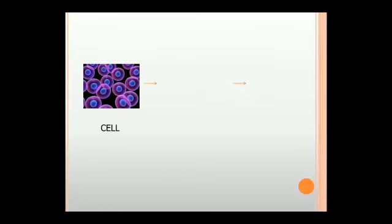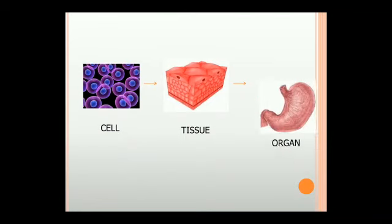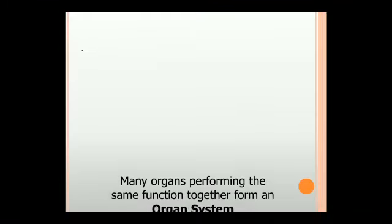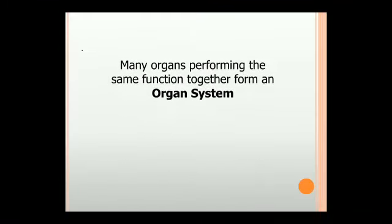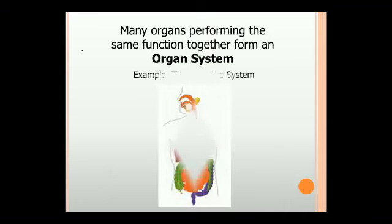Cell is the smallest part of our body. Similar cells together form a tissue, and similar tissues join to form an organ. Many organs performing the same function together form an organ system. For example, the digestive system.